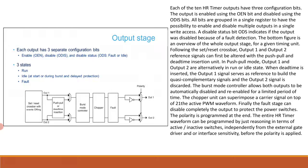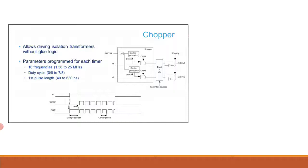The chopper unit superimposes a programmable carrier waveform on top of the active PWM signal. A carrier generator is started by the incoming pulse and added to the incoming signal by means of an AND gate. This allows interfacing with isolation transformer drivers without adding external glue logic. The carrier waveform can be programmed with three parameters: modulation frequency from 1.56 to 25 MHz, first pulse length to adjust the cycling time, and duty cycle to set the sustain current.